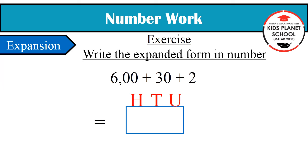600 means 6 is on 100's position, so we will write 6 below 100. Next, 30 means 3 is on 10's position, so we will write 3 below 10's. And 2 is on unit's position, so we will write 2 below unit. So it makes 632. Children, we have written the number 632 from its given expanded form.